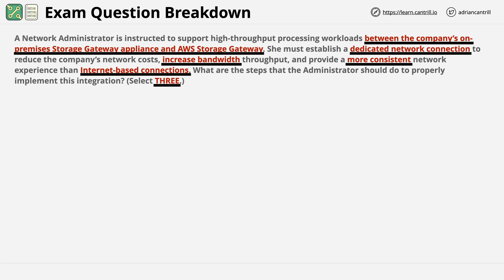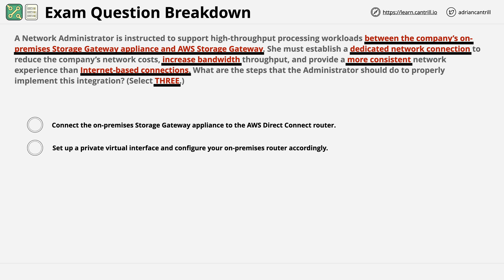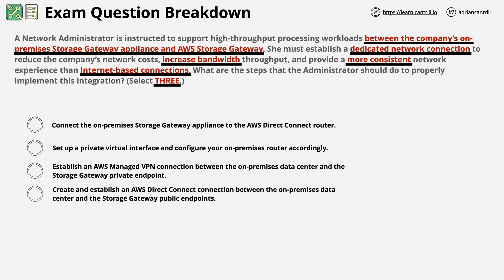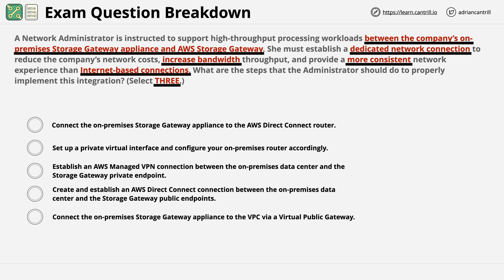Now let's talk through the available answers. The first option is to connect the on-premises storage gateway appliance to the AWS Direct Connect router. The second is to set up a private virtual interface and configure your on-premises router accordingly. The third is to establish an AWS managed VPN connection between the on-premises data center and the storage gateway private endpoint. The fourth is to create an AWS Direct Connect connection between the on-premises data center and the storage gateway public endpoint. The fifth is to connect the on-premises storage gateway appliance to the VPC via a virtual public gateway. The sixth is to create a public virtual interface and configure your on-premises router accordingly.